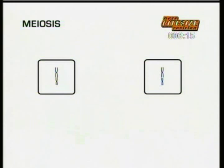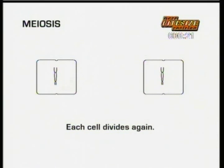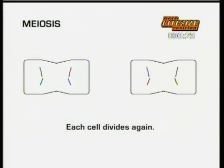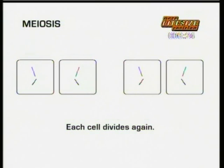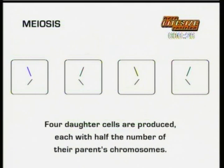Now for the second cell division. The chromosomes containing two chromatids then separate and move to opposite ends. The cell membrane pinches and each cell divides again. Four daughter cells are produced, each with half the number of their parent chromosomes.